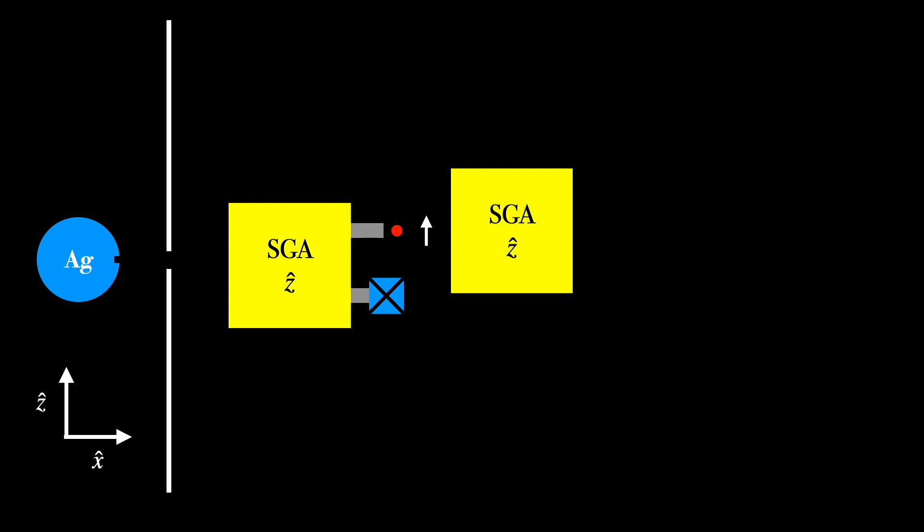The next thing we'll do is to put another Stern-Gerlach apparatus immediately after the first one. But in this instance, we will block the atoms that come out as z down and only let in the atoms that are z up. And the outcome of this is that we will see that 100% of the atoms are z up and no atoms are z down. This shouldn't be surprising, right? Since we seem to have filtered out the atoms with the property of being z down earlier.